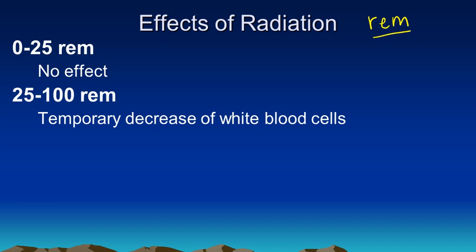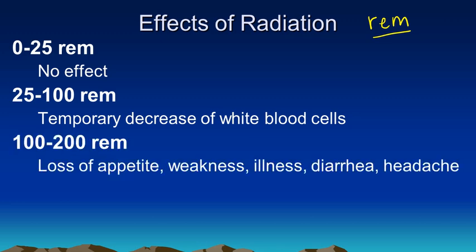If we up the dosage even higher, up to about 100 to 200 REM, somewhere in that range, then we start to notice what's called acute radiation sickness. This is where the person actually gets to be visibly ill from the effects of the radiation.